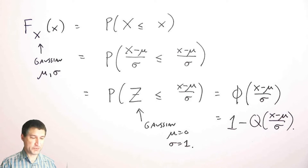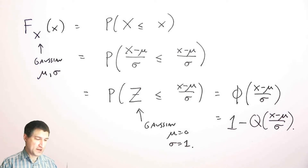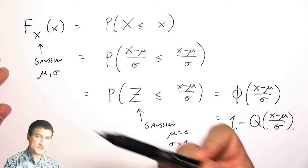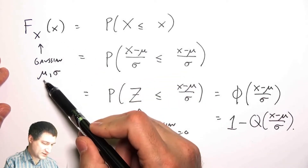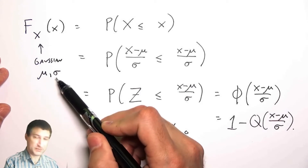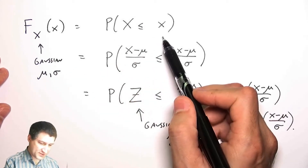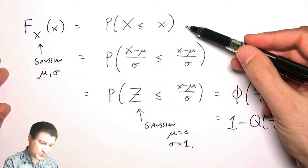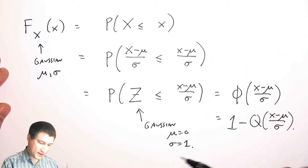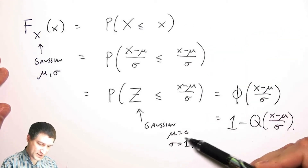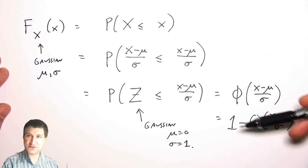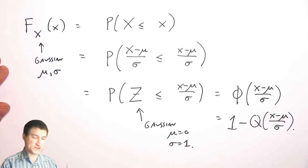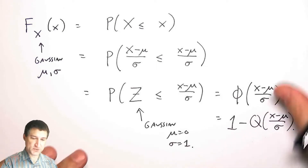I want to pick up where we left off last time, which was computing probabilities that involve the Gaussian distribution. Usually we do that by saying okay, this probability computation involves the CDF, which is some Gaussian involving arbitrary mu and sigma. We're going to convert that to what we call a standard normal — a Gaussian that has mean zero and sigma equal to one — and then use tables to find the numbers we want. This is a little abstract so I just want to do a whole bunch of example problems.